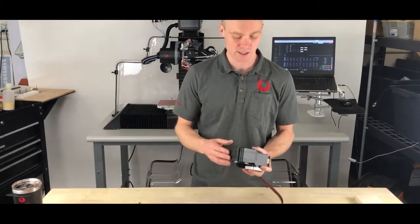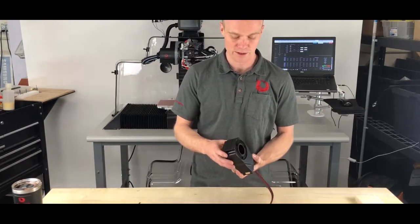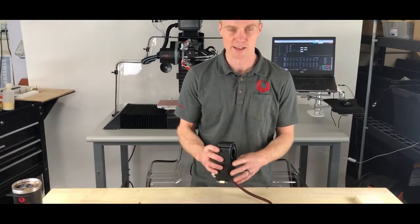The rotary axis for the H-Series machine is a compact, low-profile unit that's easy to use and quick to set up.